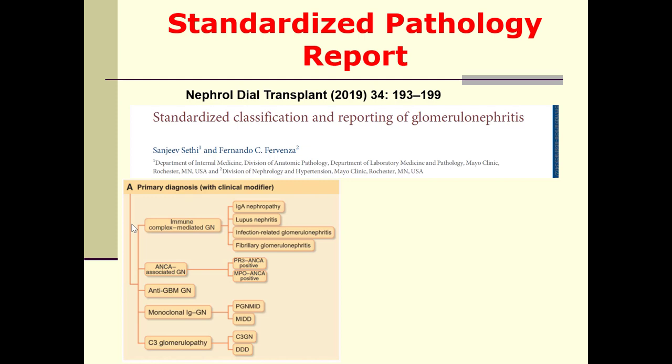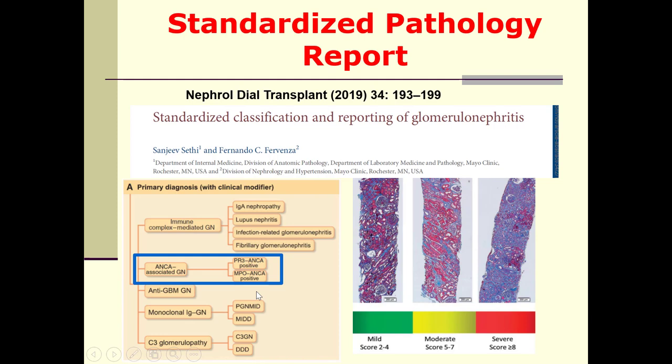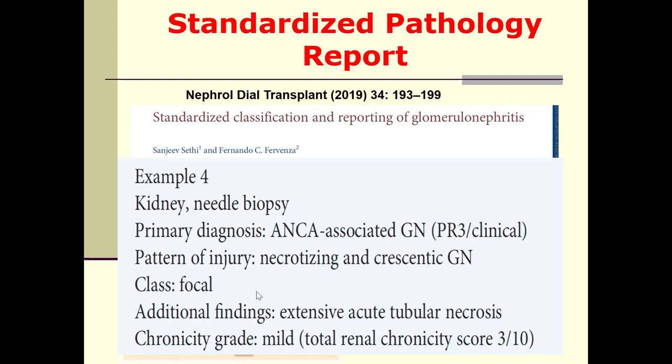A standardized pathology report is important. According to this article on standardized classification and reporting of glomerulonephritis, ANCA represents a special type. Important details include chronicity — whether mild, moderate, or severe — because sometimes we decide against aggressive immunosuppression and may consider treatment futile if there is isolated kidney involvement with advanced fibrosis. The biopsy should be reported as: kidney needle biopsy, ANCA-associated glomerulonephritis, pattern of injury — necrotizing and crescentic — class focal, with additional findings such as extensive acute tubular necrosis and chronicity.